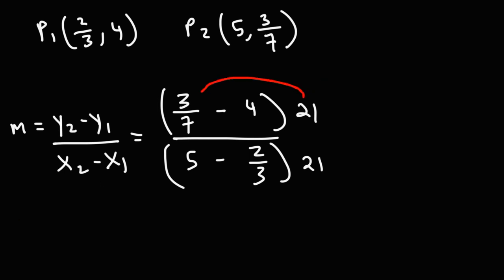Now, what is 21 times 3 over 7? 3 over 7 times 21, you can write it as 21 over 1. 21 is 7 times 3. You could cancel a 7, and you'll be left with 3 times 3, which is 9. So 3 over 7 times 21 is simply 9. Now, 21 times 4. 20 times 4 is 80. 1 times 4 is 4. Add the 2, you get 84. But we do have a negative sign in front of it.